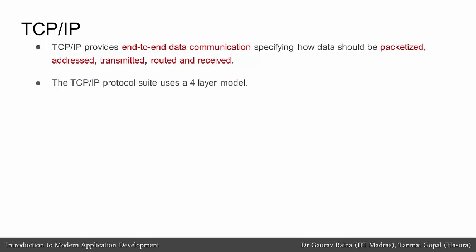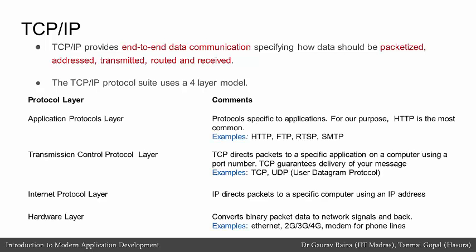The TCP/IP protocol suite uses a four-layer model. At the application protocols layer, these are protocols specific to certain applications. For our purposes, HTTP is the most common example. Other examples include FTP, RTSP, SMTP, and so on.